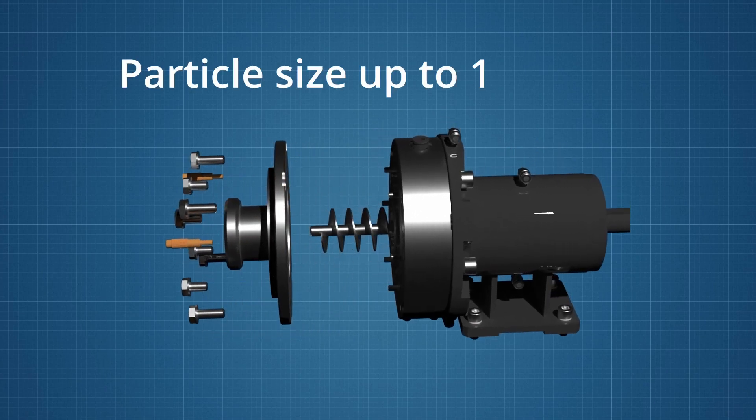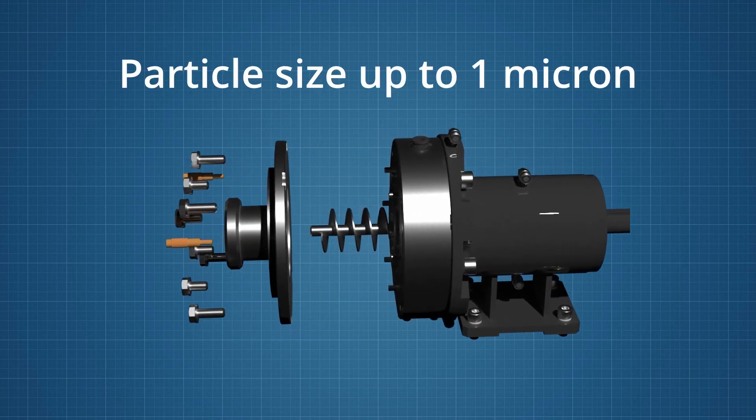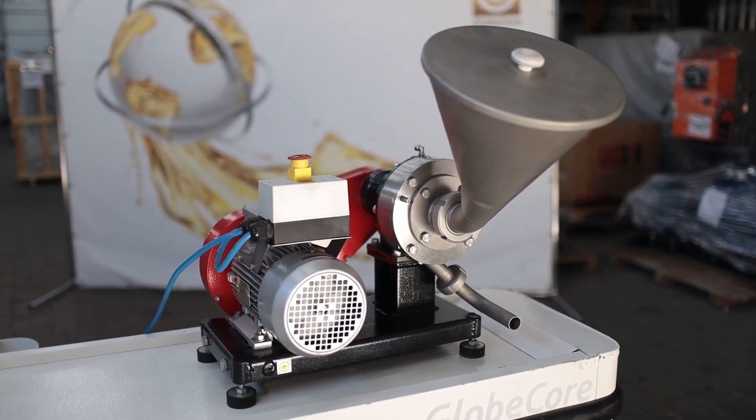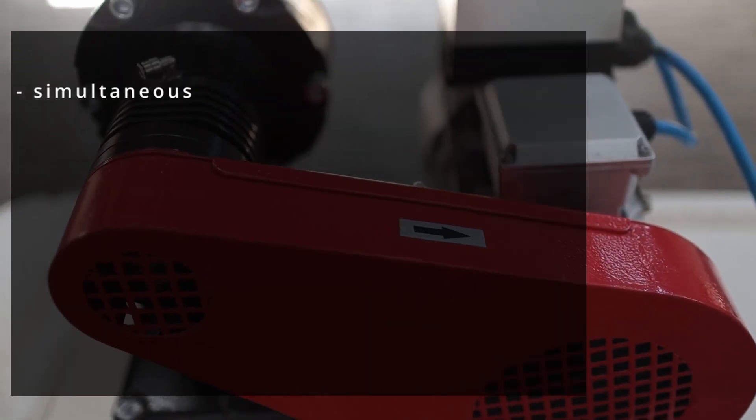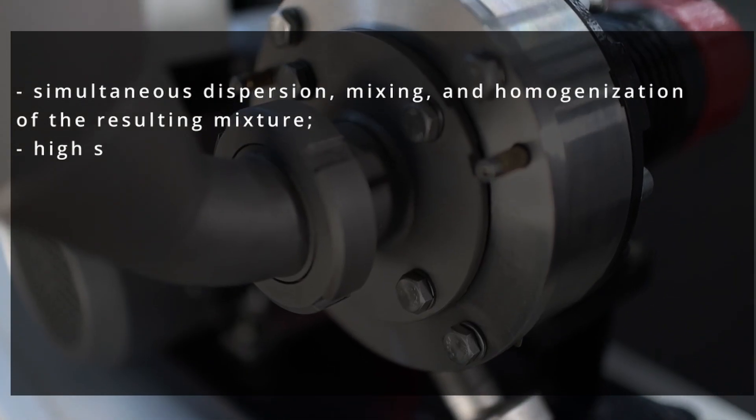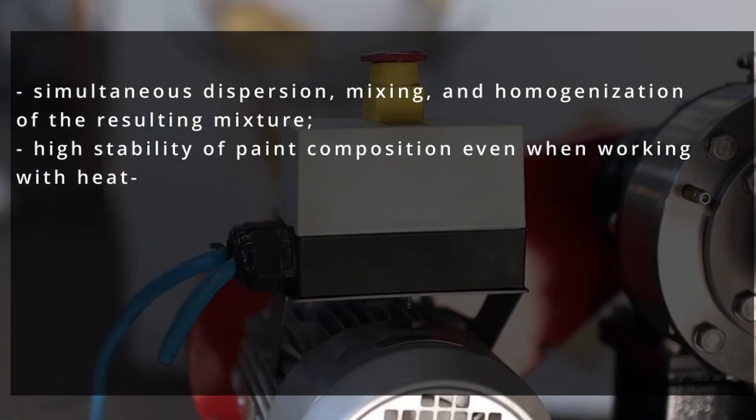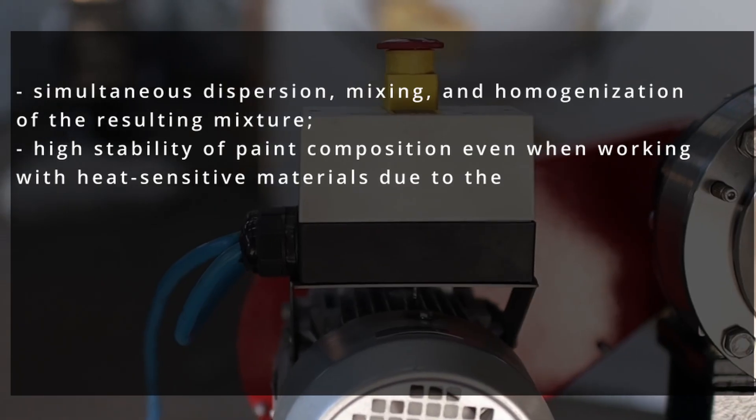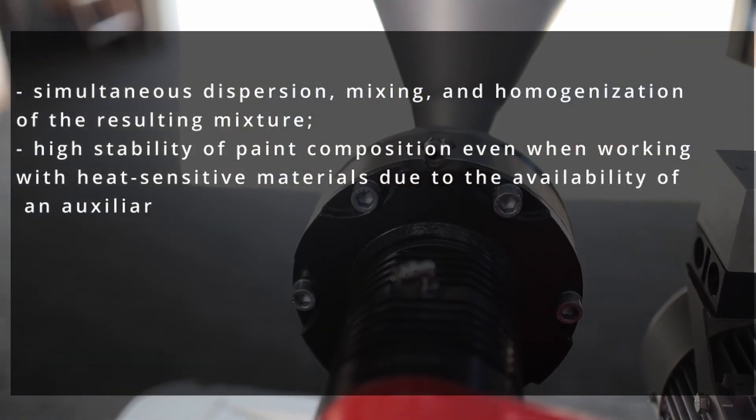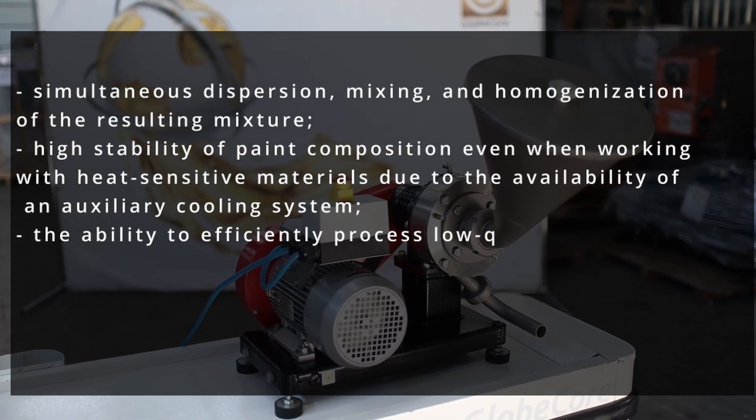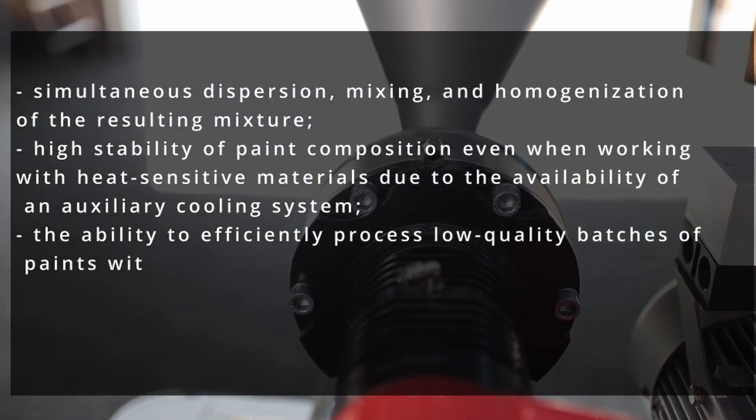GlobeCore colloid mills offer several advantages in paint production, including simultaneous dispersion, mixing, and homogenization of the resulting mixture. They provide high stability of paint composition even when working with heat-sensitive materials due to an auxiliary cooling system, and the ability to efficiently process low-quality batches of paints with disrupted texture, slumps, pigment granules, or sediment.